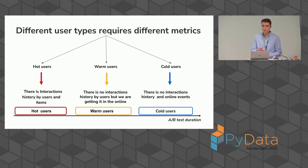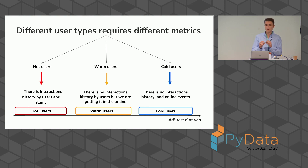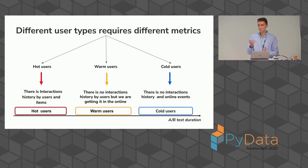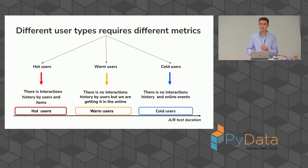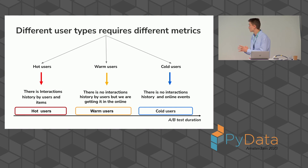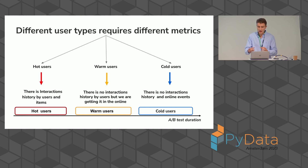I have two keys to solve these problems. The first key is to use a specific metric for each segment of users. In recommendation systems, there are typically three groups of users: hot users, cold users, and warm users. For warm users we need to increase retention metrics, because we want users to return and spend more time in our service. For cold users we can focus on conversion metrics like CTR, because we want to involve users in our service.